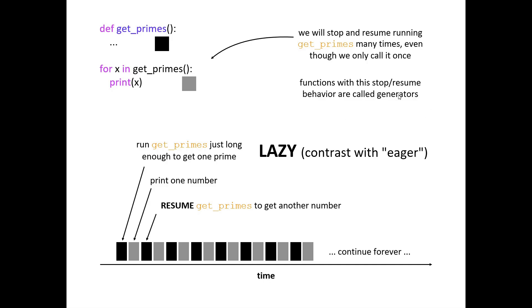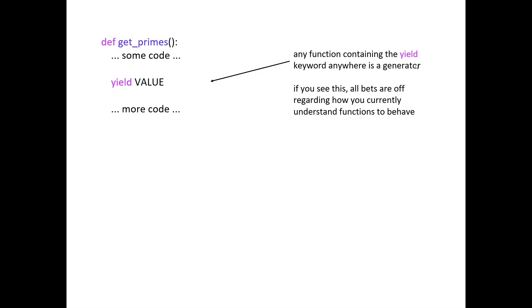Generators execute until they hit a yield statement, then they pause. We yield one number, then resume to get the next. We'll call get_primes many times but only call the function once. That's the idea behind a generator. The definition: any function that contains the keyword 'yield' anywhere in it. Yield is a lot like return — it gives the value back to the caller — but then it pauses execution until the function is used again.